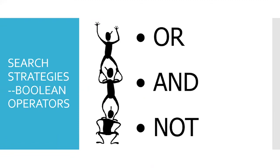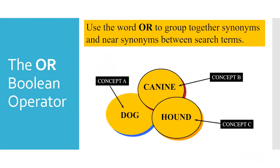One way to get fewer and better results is to add keywords and use Boolean operators — OR, AND, or NOT — to link them. Using OR means you're searching for multiple keywords equally. If you search for 'dog OR canine OR hound,' the results will contain articles that mention any of those terms, retrieving more results than if you searched for only one.